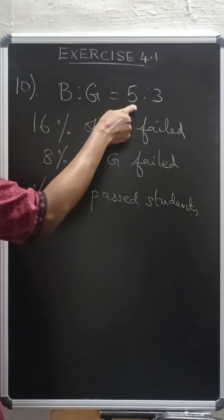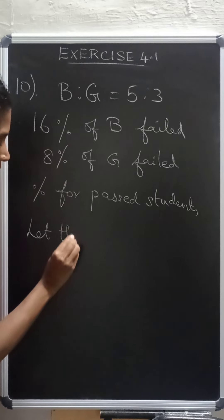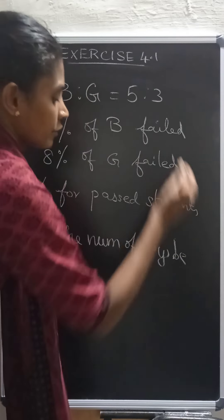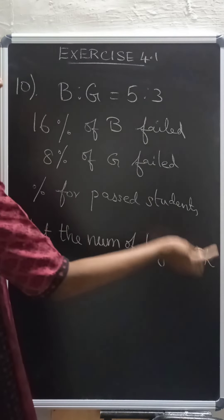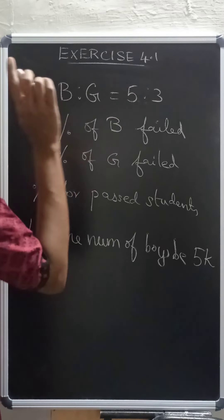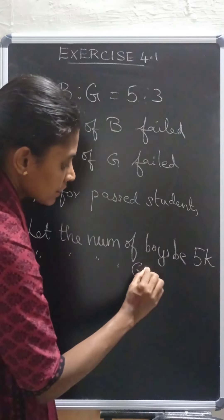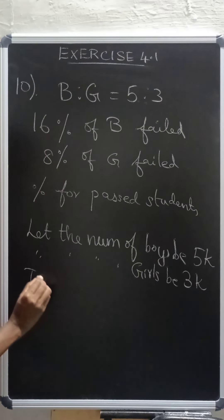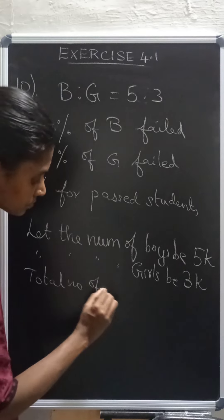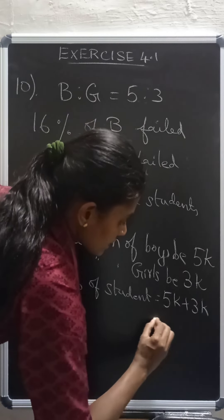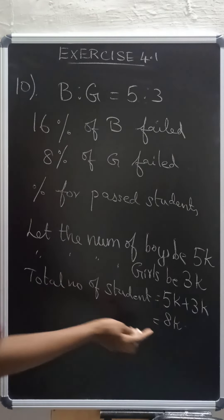Now let us see how to do the sum. Now since it is given in the ratio, we will take with a constant. Let the number of boys be 5k. So we don't know. There is some constant only, right? In the multiplication, if you understand ratio, you will understand why I have taken k here. Now let the number of boys be 5k. Let the number of girls be 3k. Now total number of students is equal to 5k plus 3k, which is equal to 8k. So this is the total number of students.